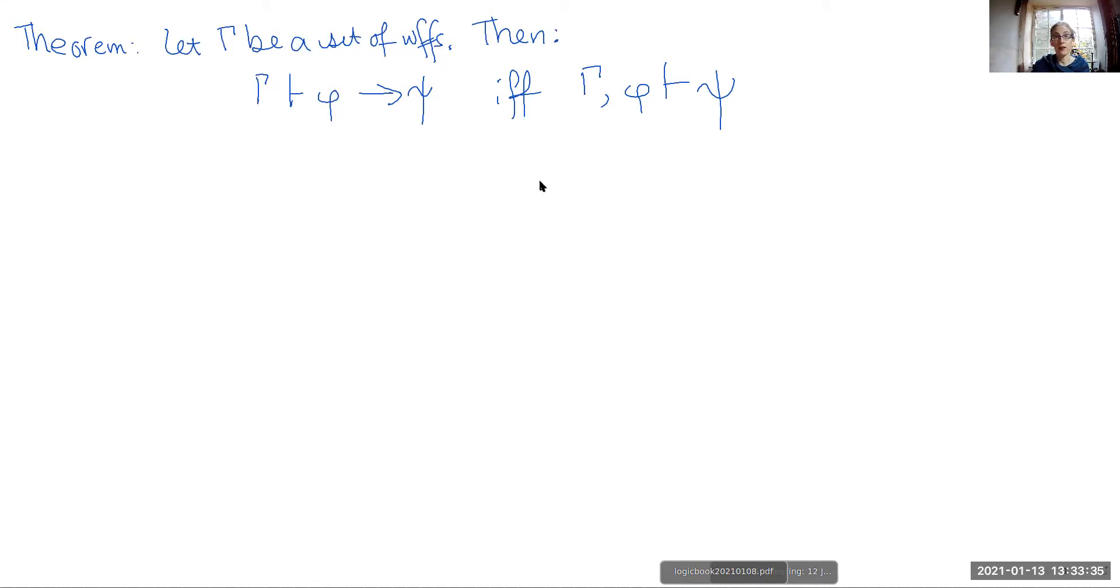Now this is an if and only if claim, so that means that we've got to prove both from the left to the right and from the right to the left. So the proof has two parts. We will start with the right to the left.